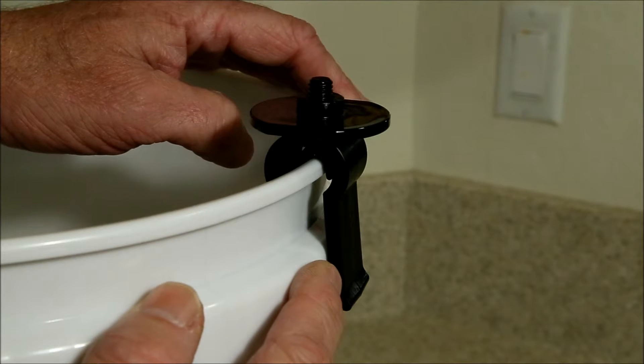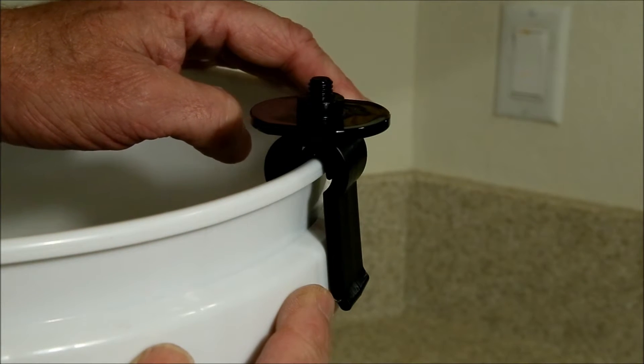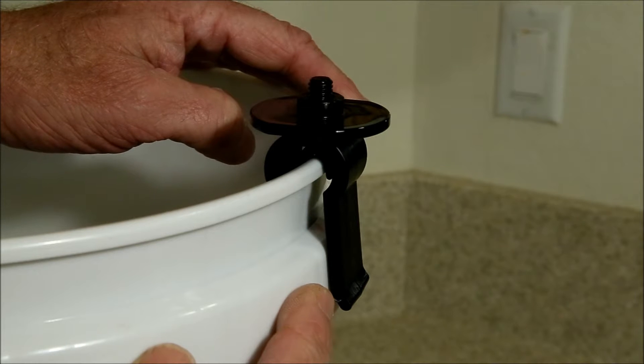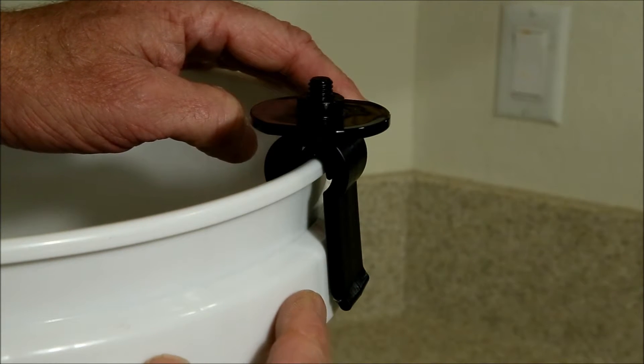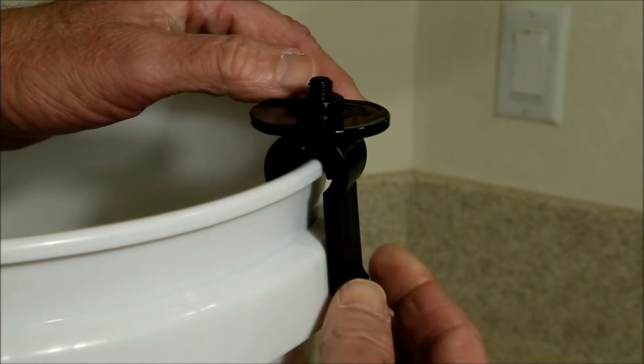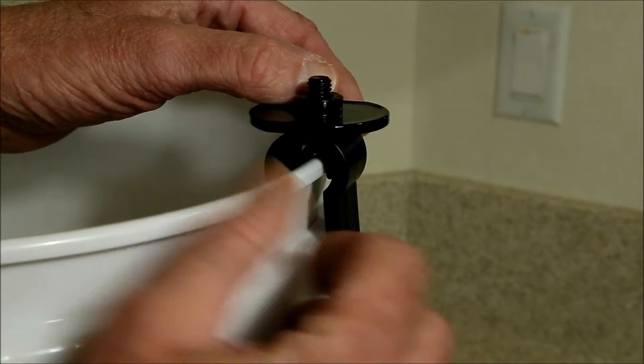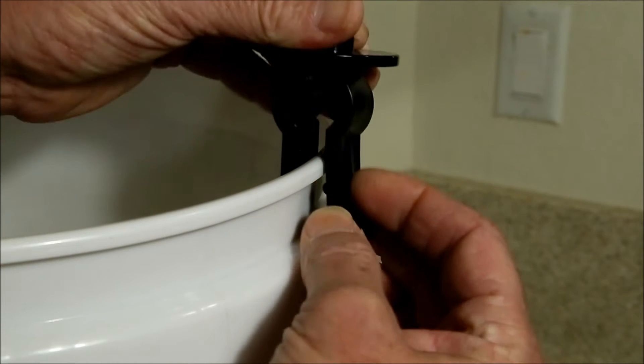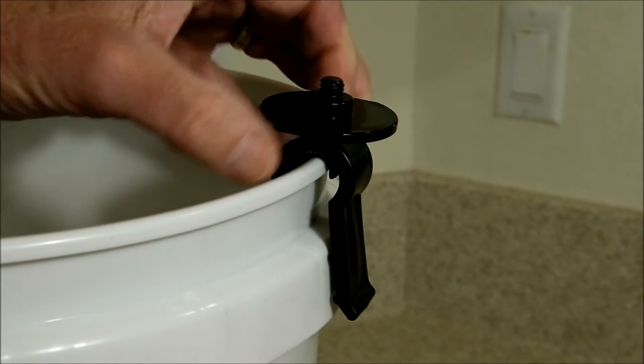Like many prospectors, instead of the recommended 3.5 gallon bucket, I prefer to use a 5 gallon bucket for my blue bowl, which creates a problem because all of the 5 gallon buckets in my area have this support ridge. Because of this, whether you use the legs with the smooth side on the outside or the toothed side on the outside, almost invariably...